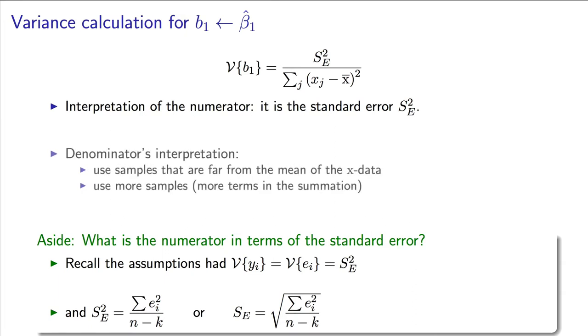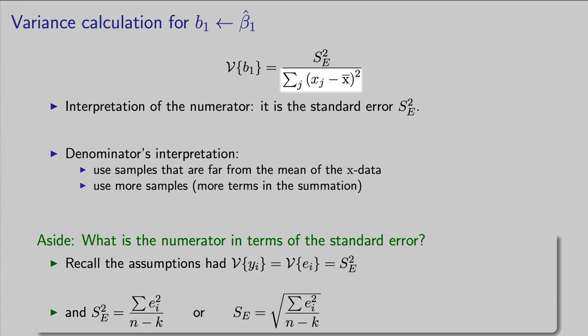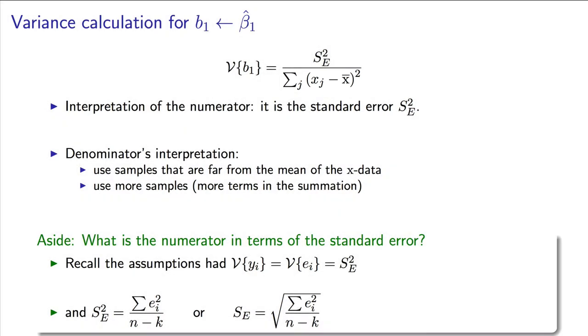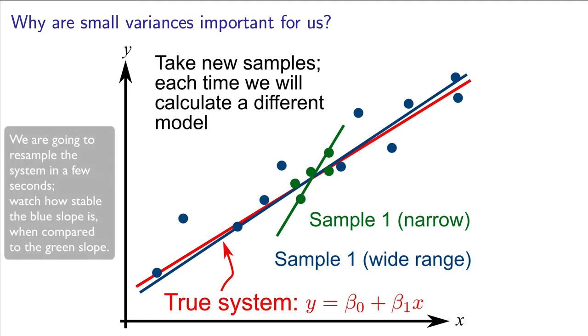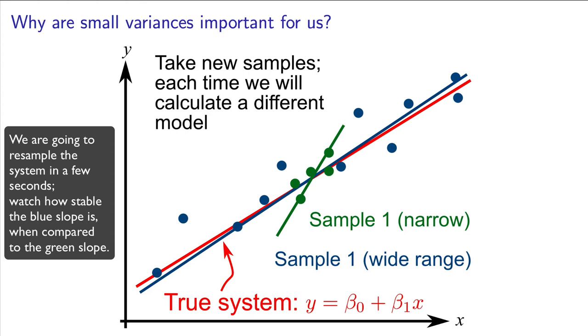Now the denominator term illustrates for us that provided we sample x values that are far away from the mean, those xj's are far away from x-bar, then we get a large denominator, which implies a small variance of b1 as well. Practically speaking, that implies we should make sure our data are sampled over a wide range of x. Spanning a large x-range means that the slope can be estimated with greater accuracy.